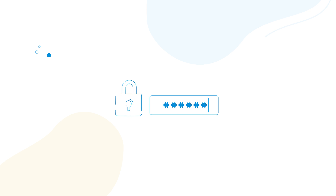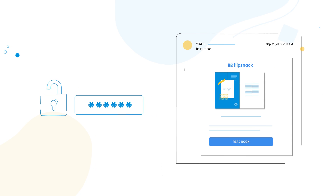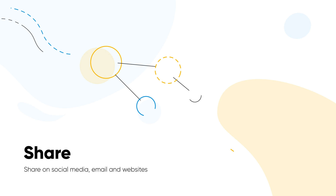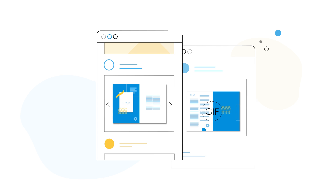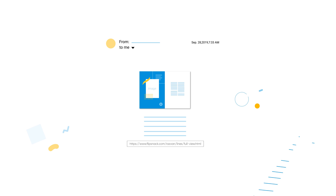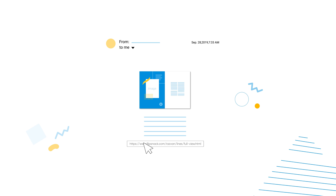You can keep your page flip catalogs private, password protected, share them with specific people, or even go public. Sharing is easy and you have so many options. Share your catalogs via social media as links, GIFs, or embeds. Integrate the interactive widget on your site, send it via email directly through our platform, or simply share the link with anyone.